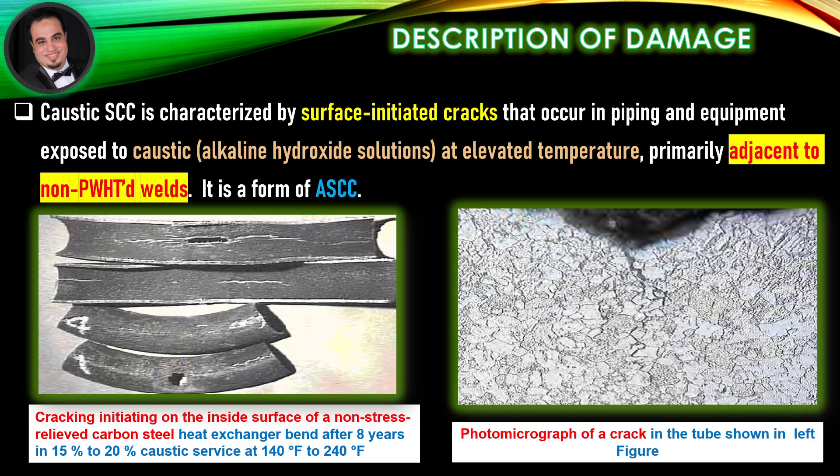Cracking initiating on the inside surface of a non-stress-relieved carbon-steel heat exchanger bend after 8 years in 15% to 20% caustic service, at 140°F to 240°F. A photomicrograph of a crack in the tube is shown in the left figure.